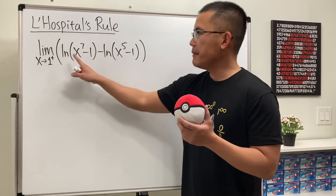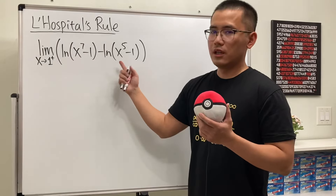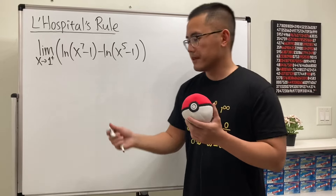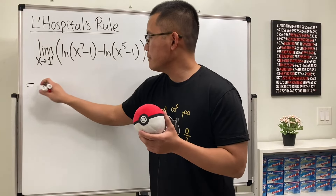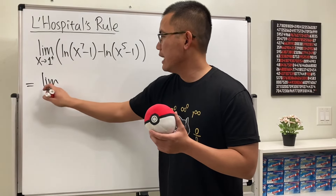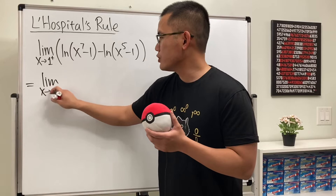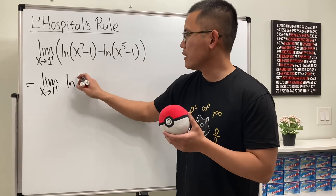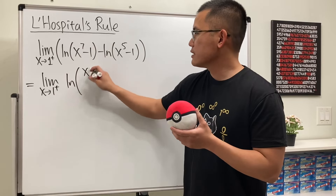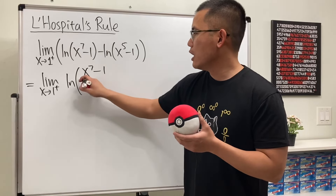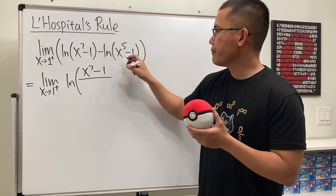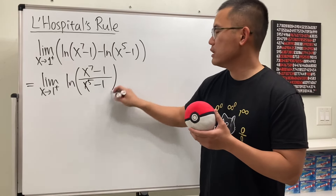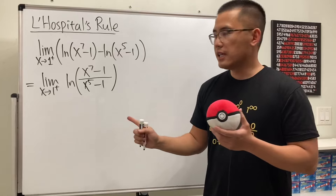Let's combine them. This time we can use the ln property to put the insides together. So this right here is the same as the limit as x approaching 1 plus, and then we will just have one natural log of x to the 7th power minus 1 over x to the 5th power minus 1, just like this.